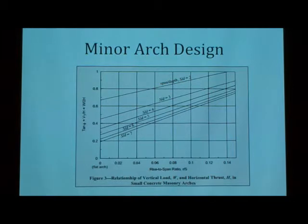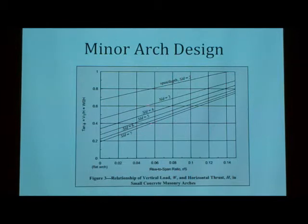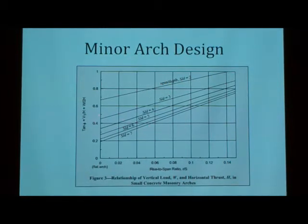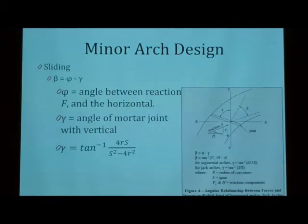Here's a chart that I was telling you about. That will allow you to get your W over 2H. It will allow you to know your S over D and your R over S. You just pick your span-to-depth ratio line, and you have the rise-to-span ratio. You pick it, you go over, you pick the value, and you solve for H. Now, S over D equals zero is not on here — it's actually just a flat arch, but it's not on this chart.